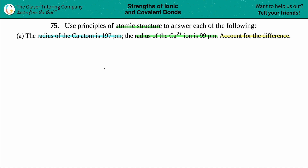We have a calcium atom, and then we'll show what happens when we turn it into a 2+ ion. Just remember that 2+ means that we lost two electrons. The positive always means we're losing electrons — we're more positive. The negative means that you gain electrons, because those electrons are negative.